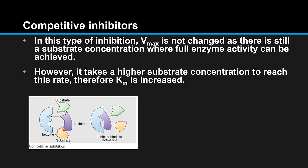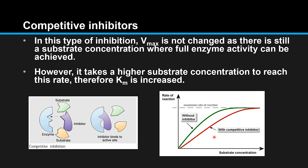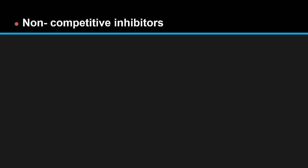Here we have the inhibitor and as you can see it binds to the active site, preventing the substrate molecule from doing so. From this graph we can see that with the competitive inhibitor the Vmax is the same, but the Km — which is half the value of Vmax — would be higher.